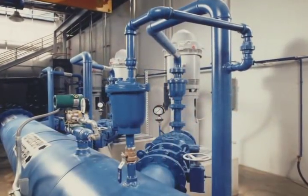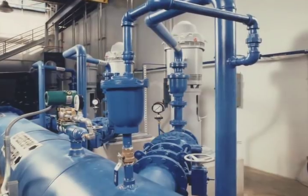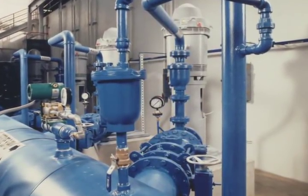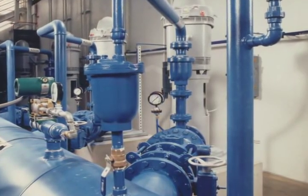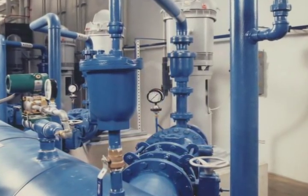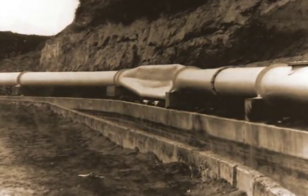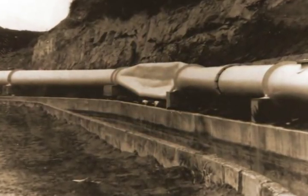In reality, many of these problems are not caused by improper installation of the line, but by failure to de-aerate the line. Properly de-aerating your pipeline will safeguard it from air-related problems. If this isn't accomplished or is done improperly, efficiency will suffer and the pipeline is at risk.